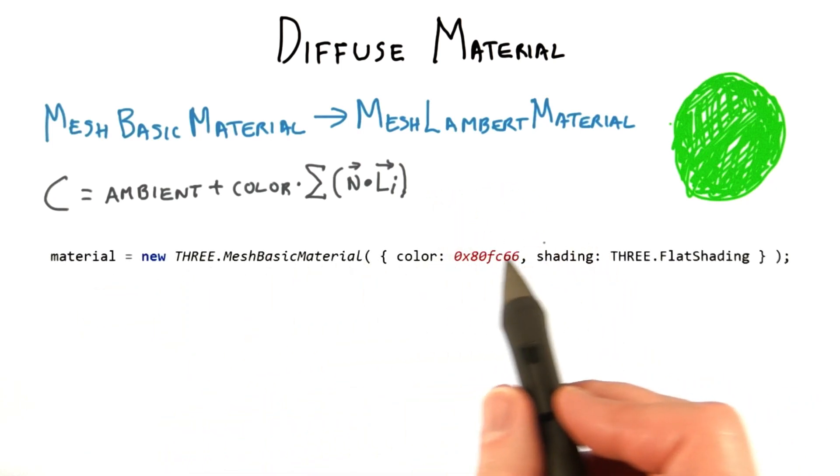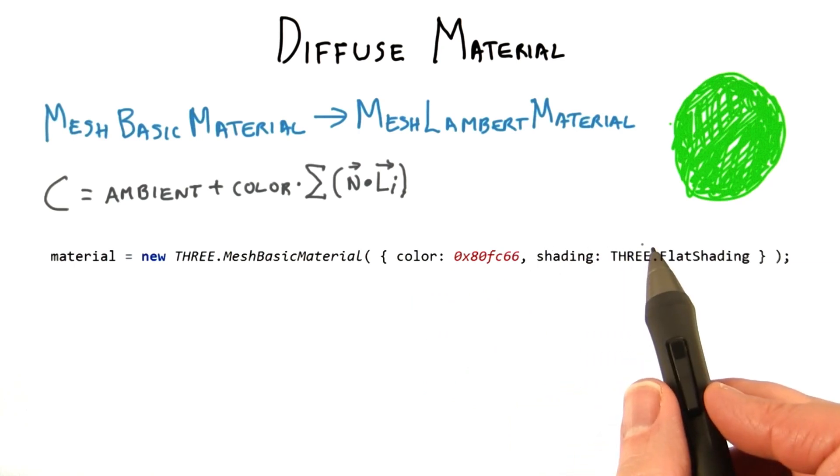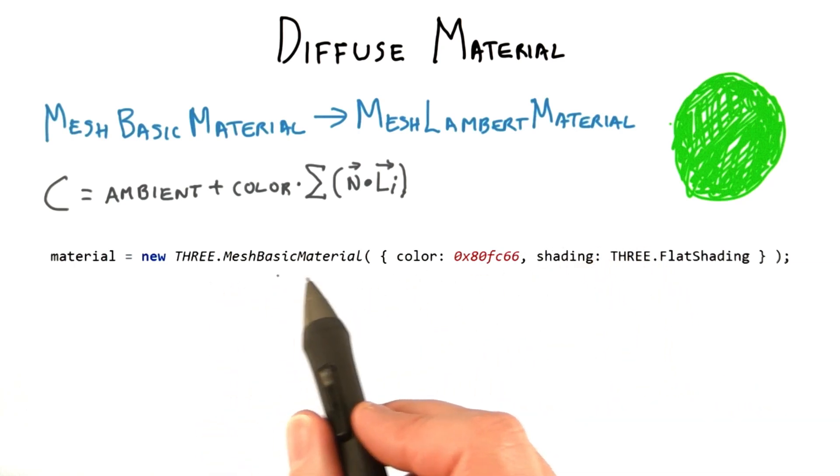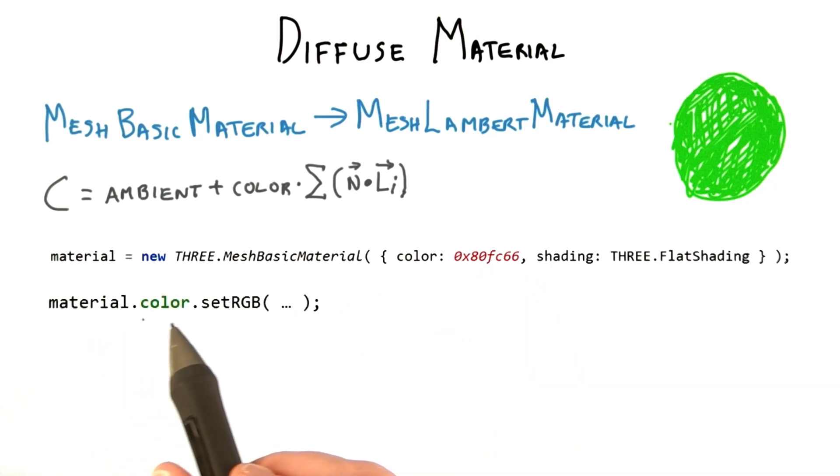In the exercise, you'll see code like this. This code sets up the solid color. By switching this material to Lambert material, the color set here is for the diffuse component. You could also explicitly set this color after creation with the following code, as usual.